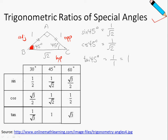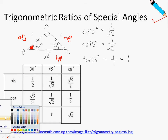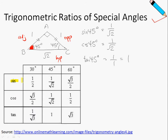Looking at our table, this makes sense — the sine of 45 degrees as we have proven is 1 over root 2, which matches the table. Similarly, you can read off the cosine and tangent values from the table as well.